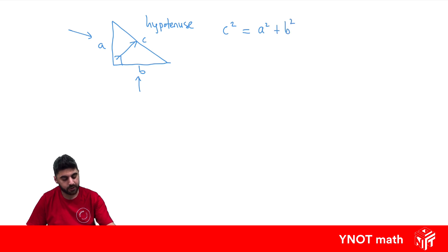But if we wanted to find A or B, we can rearrange our equation. If we minus B squared from both sides, for example, B squared minus B squared will go, and we're left with C squared minus B squared equals A squared. And it's important to know that when you're finding a shorter side, it's the hypotenuse squared minus the other shorter side squared.